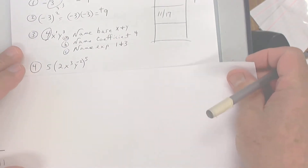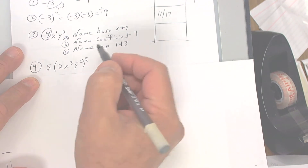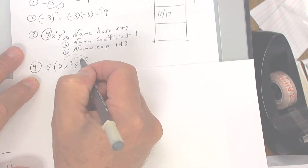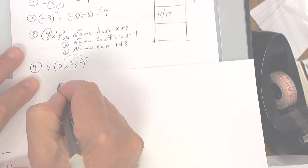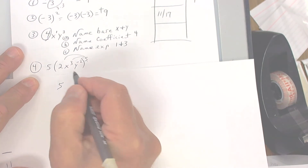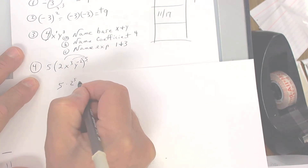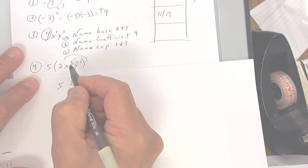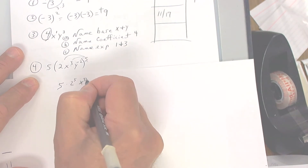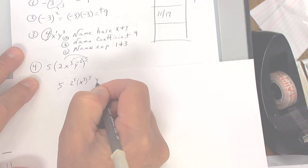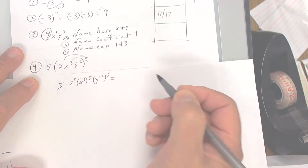This one right here, the five is not affected, but everything inside here is going to be to the fifth power — it's almost like the distributive property. So it's going to be two to the fifth power, x to the third to the fifth power, and y to the negative two to the fifth power.